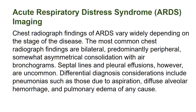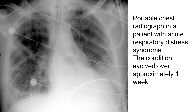The most common chest radiograph findings are bilateral, predominantly peripheral, somewhat asymmetrical consolidation with air bronchograms. Septal lines and pleural effusions, however, are uncommon. Differential diagnosis considerations include pneumonias, such as those due to aspiration, diffuse alveolar hemorrhage, and pulmonary edema of any cause.